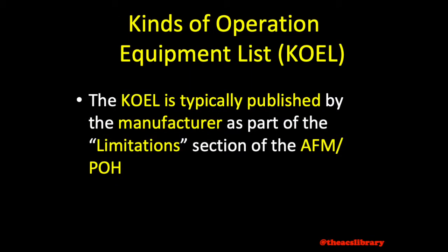The kinds of operations equipment list is typically published by the aircraft manufacturer as part of the limitations section of the airplane flight manual or the aircraft's POH. However, there is no designated format for publication, and the kinds of operations equipment information may be furnished in various ways by the manufacturer.